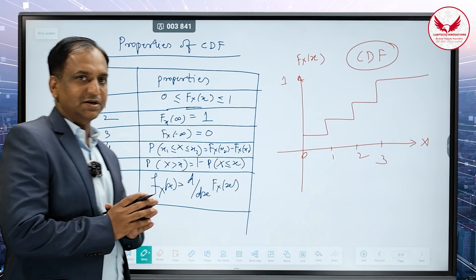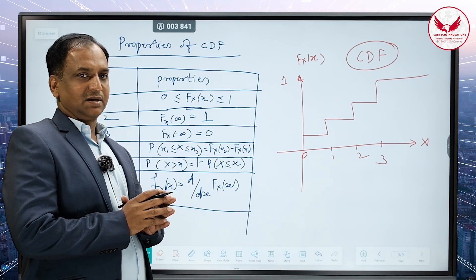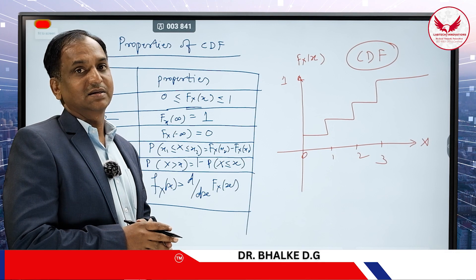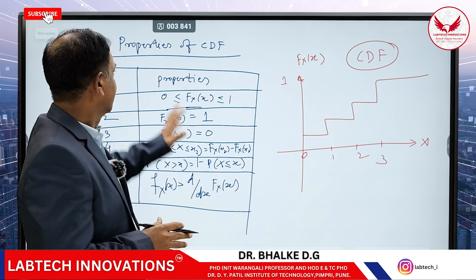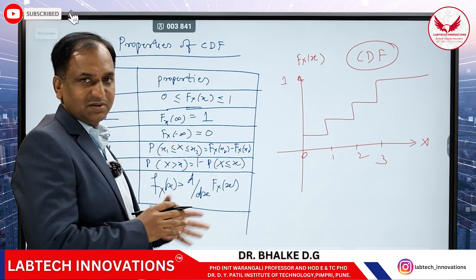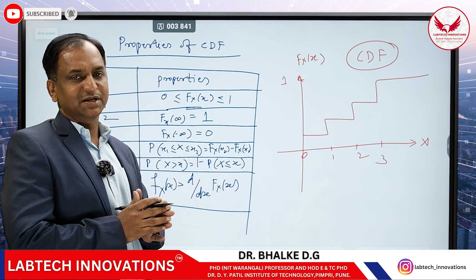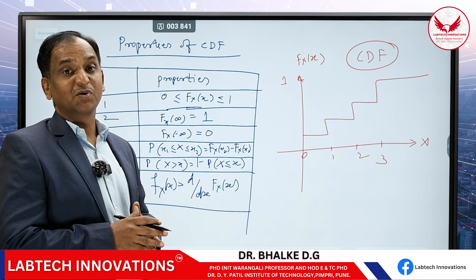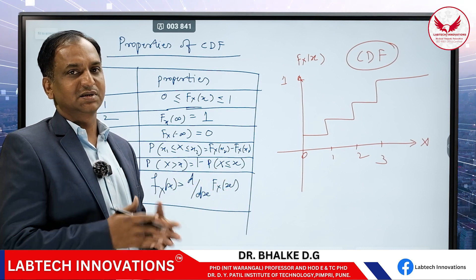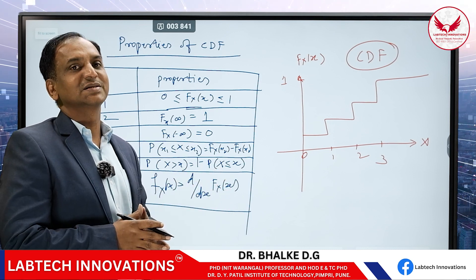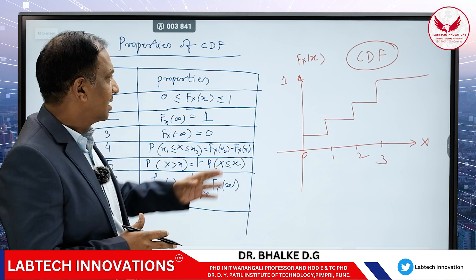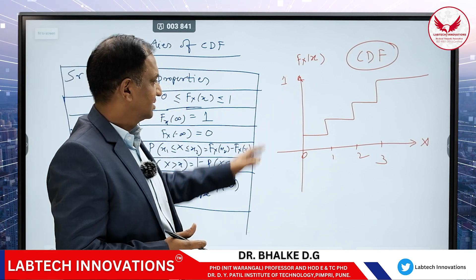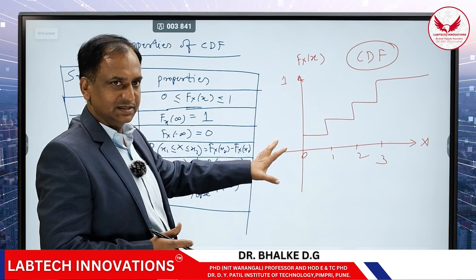The next very important point is that you have to solve the CDF problem, so you have to know the properties of any transform. Properties of any transform help to make the problem easier — it reduces the complexity of the problem. If we have seen that tossing 3 coins, the CDF is like this.